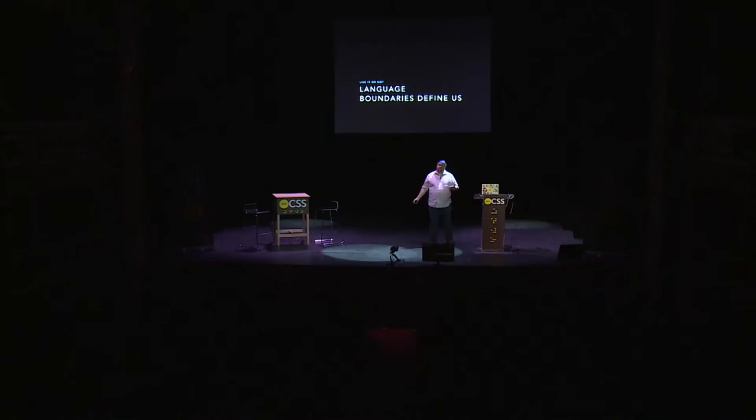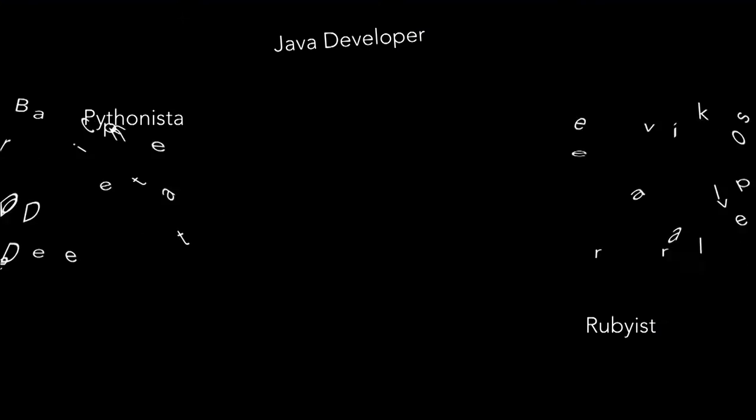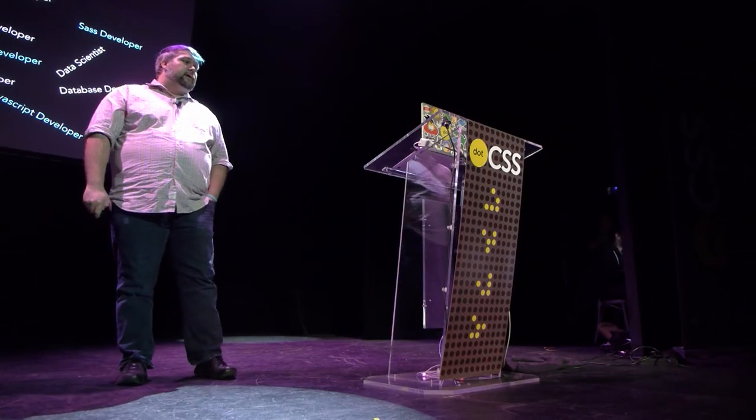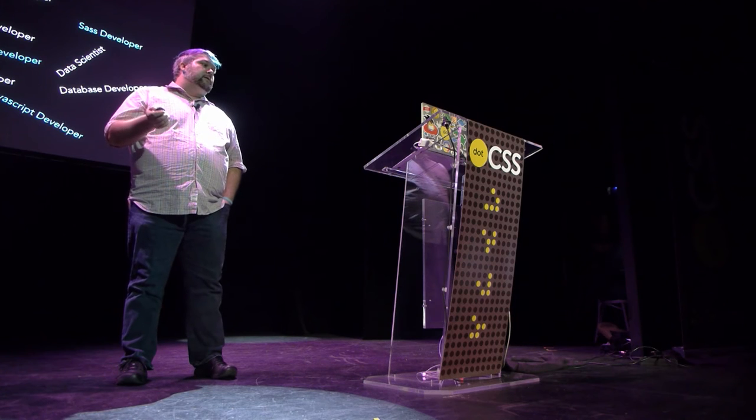Because, like it or not, those decisions have effects not just at a technical level, but they actually affect us as people. Those language boundaries that we've created around the different technologies that we use — they define us. I'm willing to bet that every single one of us here identifies as one of the labels on screen right now: CSS developer, JavaScript developer, front-end developer, hopefully a few Sass developers. These labels can create a sense of community and belonging, and that's a really powerful thing. When we attach ourselves to one of these labels, it helps us feel like we're doing something great and part of something important.